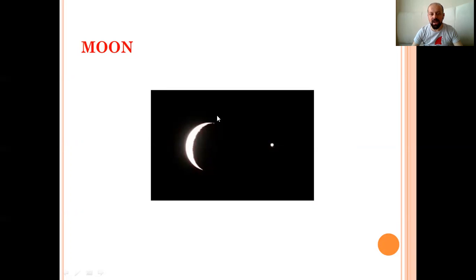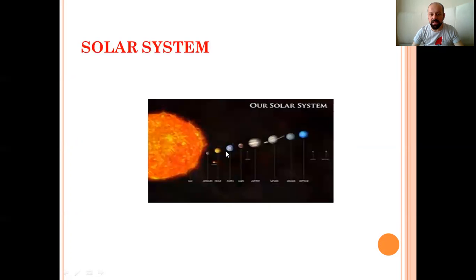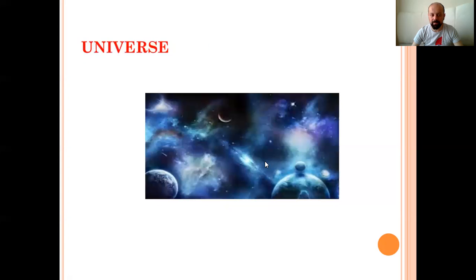Moon. Yes, our satellite. When it is at night we can see moon in the sky. Okay, moon. Solar system. All the planets in our solar system. Güneş system in Turkish meaning. Yes, you can see the sun and the other planet in solar system. Universe. Universe is evren in Turkish meaning. Okay, universe.